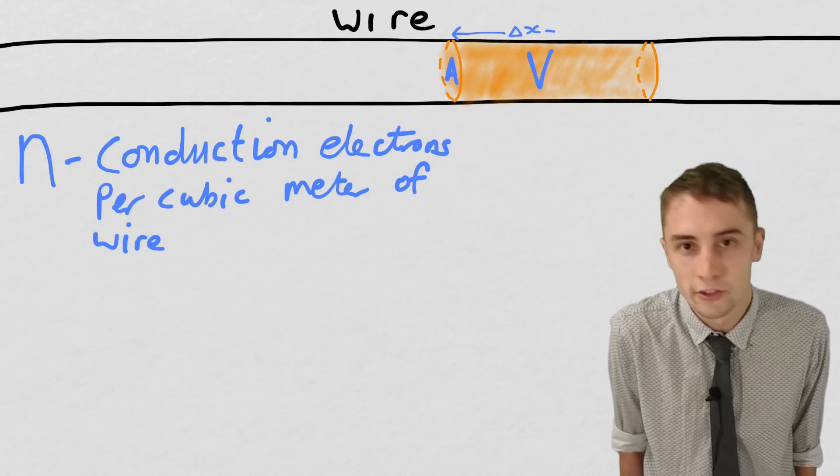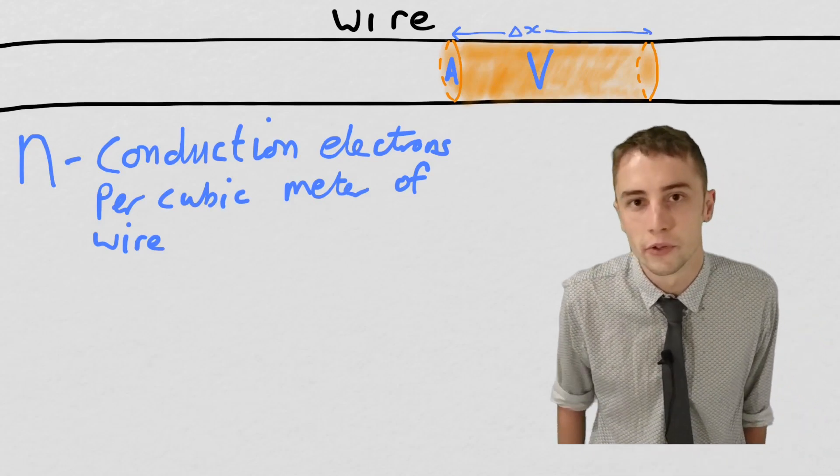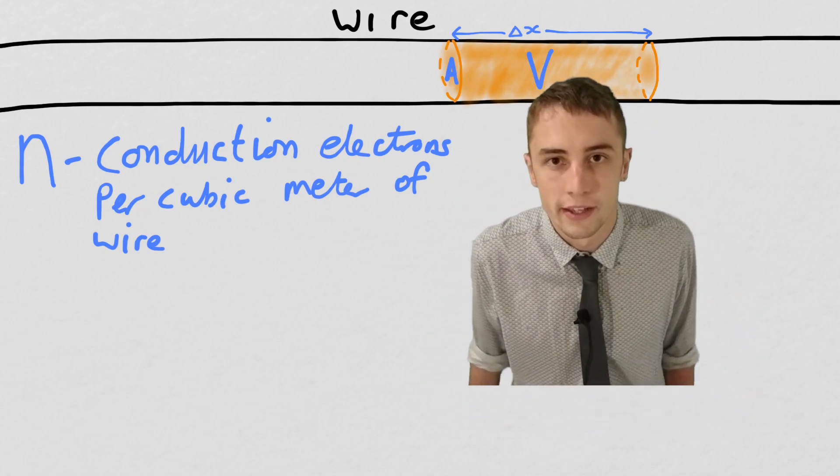So these electrons are going to move through this volume a distance of delta x. They're going to change position on average by delta x, which we can represent up here with delta x.